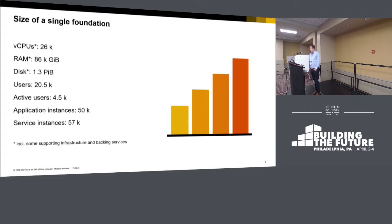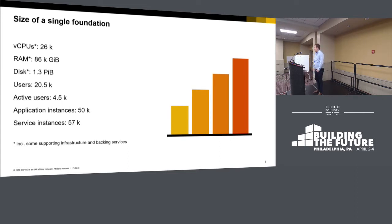The second challenge is the size of a single foundation. As Chip mentioned in the keynote this morning, we are running an internal system where all the SAP application development takes place. There is one important number, which is the RAM — we are consuming around 50 terabytes of application runtime memory, which is quite huge. If you do the math, we were running with cells at 32 gigabytes, which sums up to 1,400 cells. We recently increased the runner sizes to 64 gigabytes, so we are now running with 700 cells on that system.